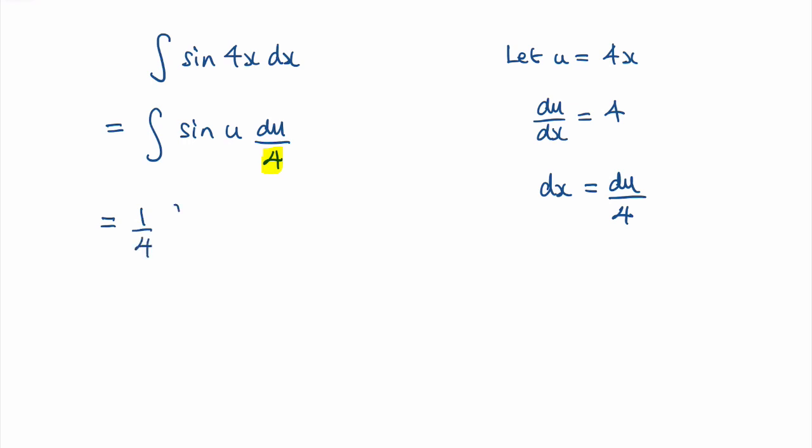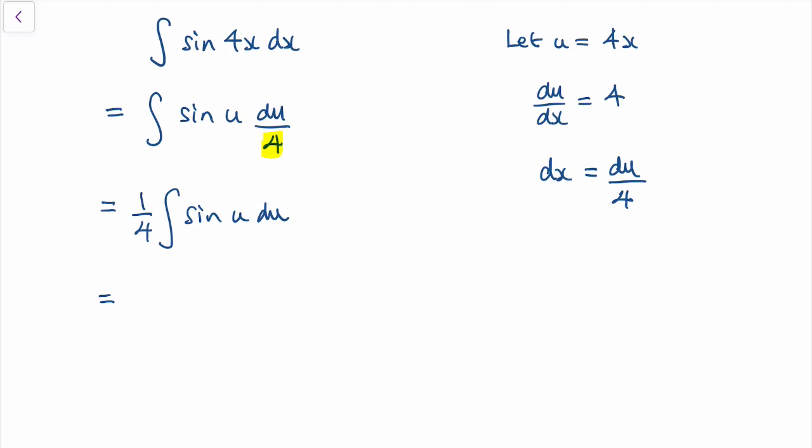the integral of sin u with respect to u. Doing that integration, we know the integral of sin u is negative cos u, and that's over 4 from that quarter. Then we add the constant of integration.